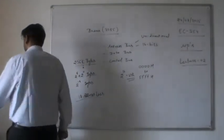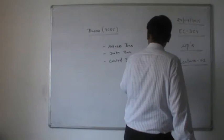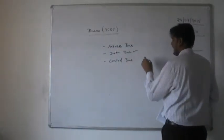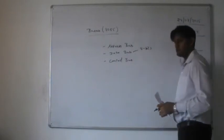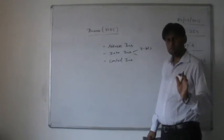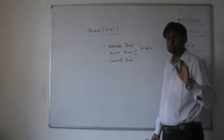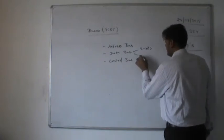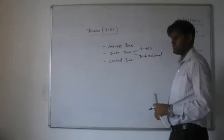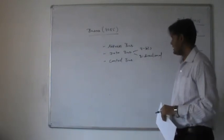The data bus in the 8085 has only 8 wires — it is 8 bits wide. Since data can flow from microprocessor to memory, memory to microprocessor, or microprocessor to peripherals and back, the data bus is bidirectional. However, at any one time only one direction is possible.